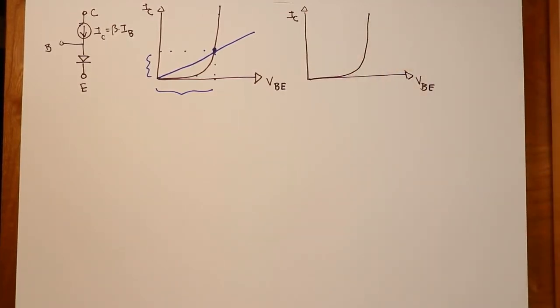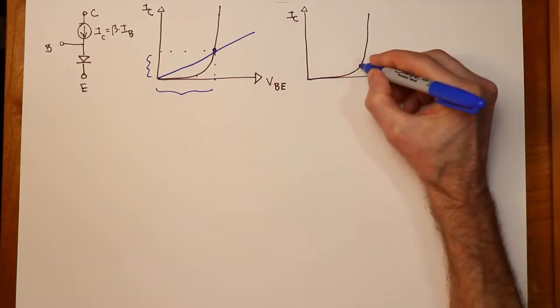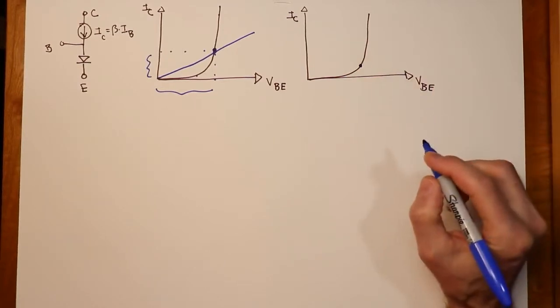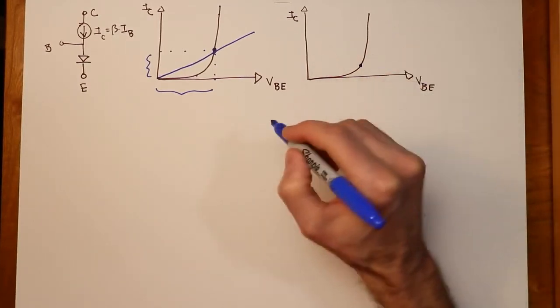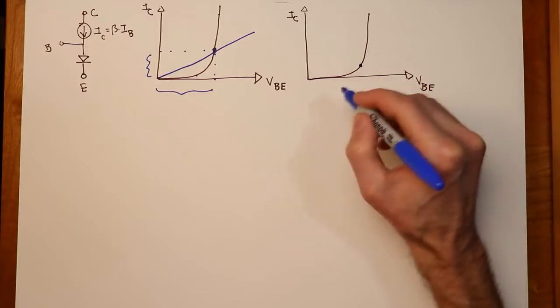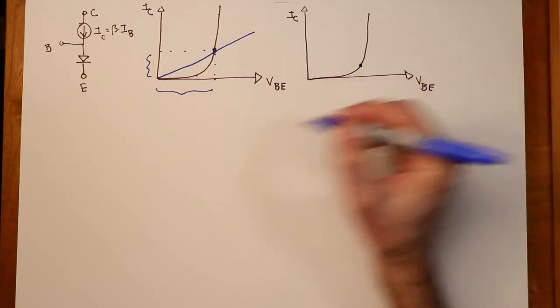Now when we operate at a certain point, we have a bias. So we'll just say it's right there. And now the AC signal is going to be riding on top of this DC signal. So it's going to be swinging back and forth. As the AC signal comes in,